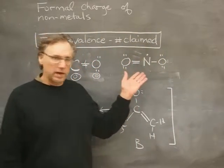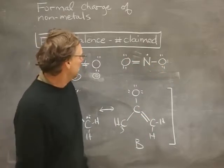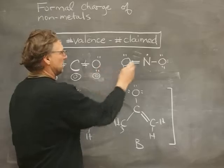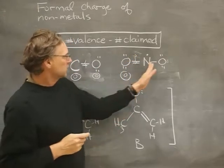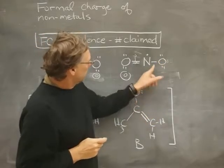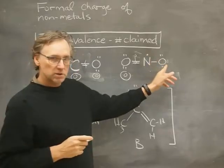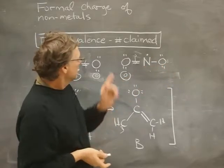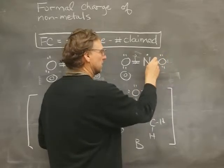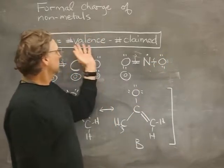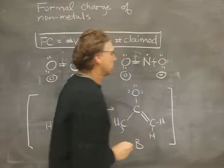I'll try NO₂ now. I've already drawn a Lewis structure for NO₂. This oxygen looks just like the one in CO₂, so it has a formal charge of zero. This other oxygen is looking a little different. Valence electrons for oxygen is still six, but the number it claims is one, two, three, four, five, six, seven. So six minus seven is minus one — that oxygen has a formal charge of -1.